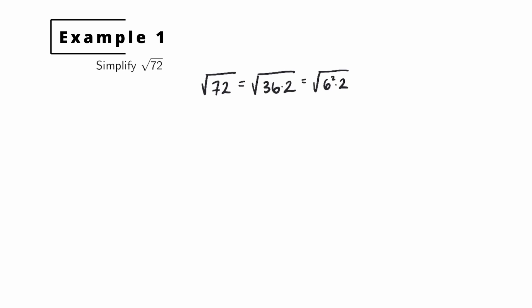Now we use the multiplication property of radicals, writing this as the square root of 6 squared times the square root of 2. We can write the square root of this product as the product of the square roots. The square root of 6 squared is 6, leaving us with 6 times the square root of 2.